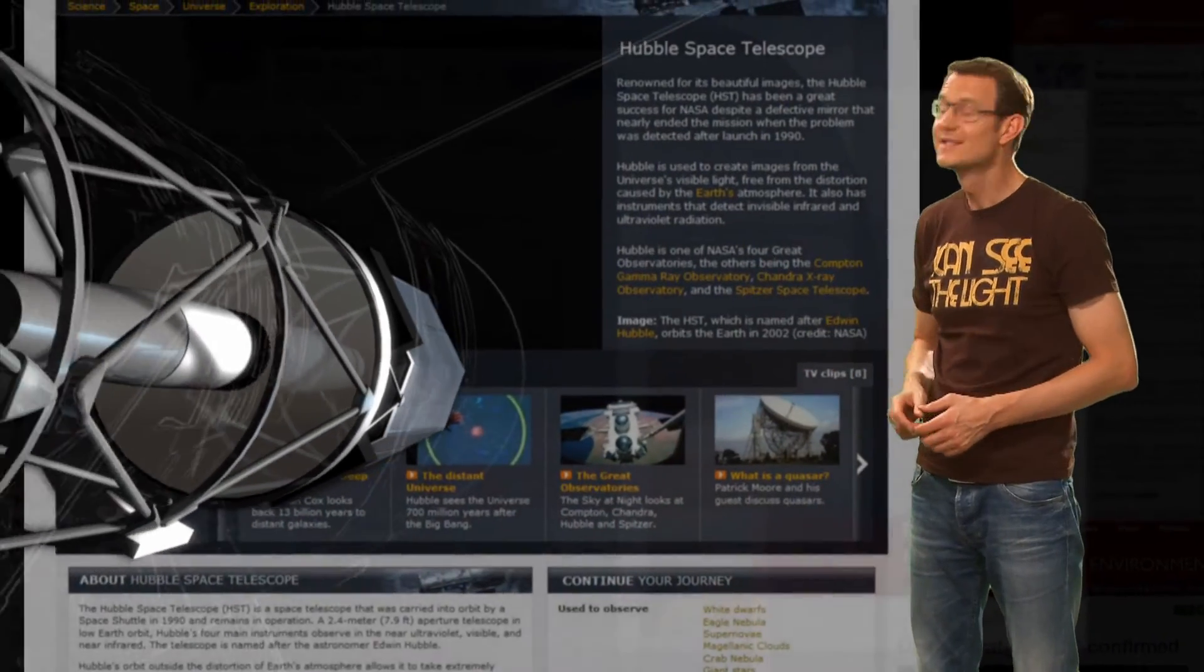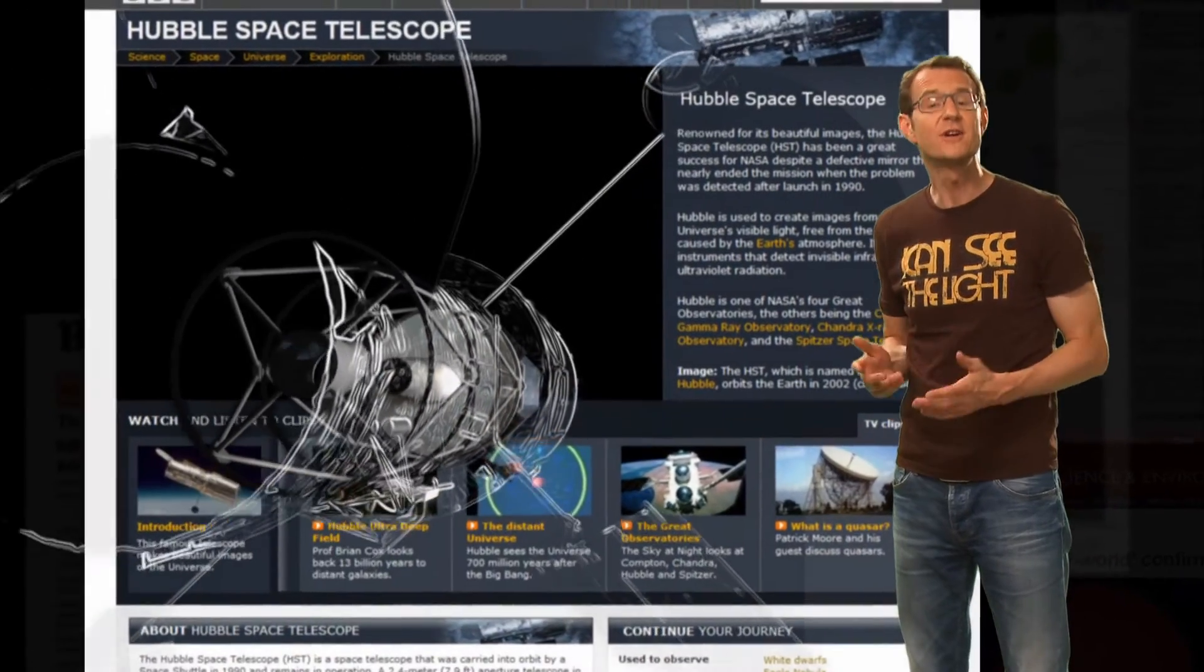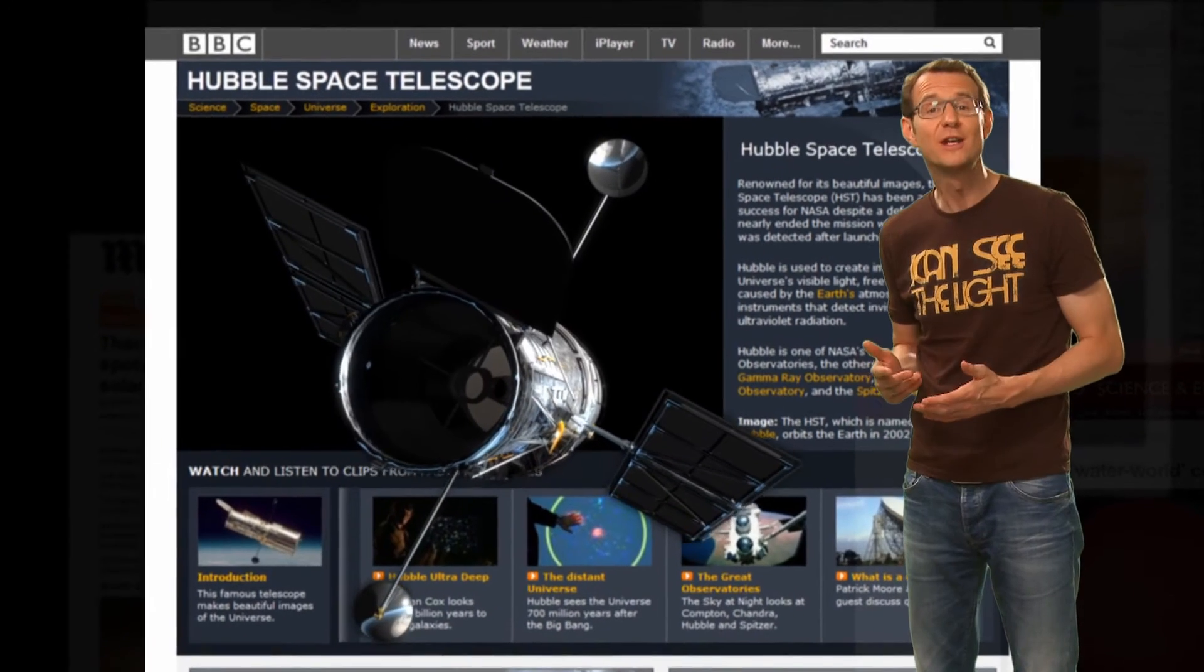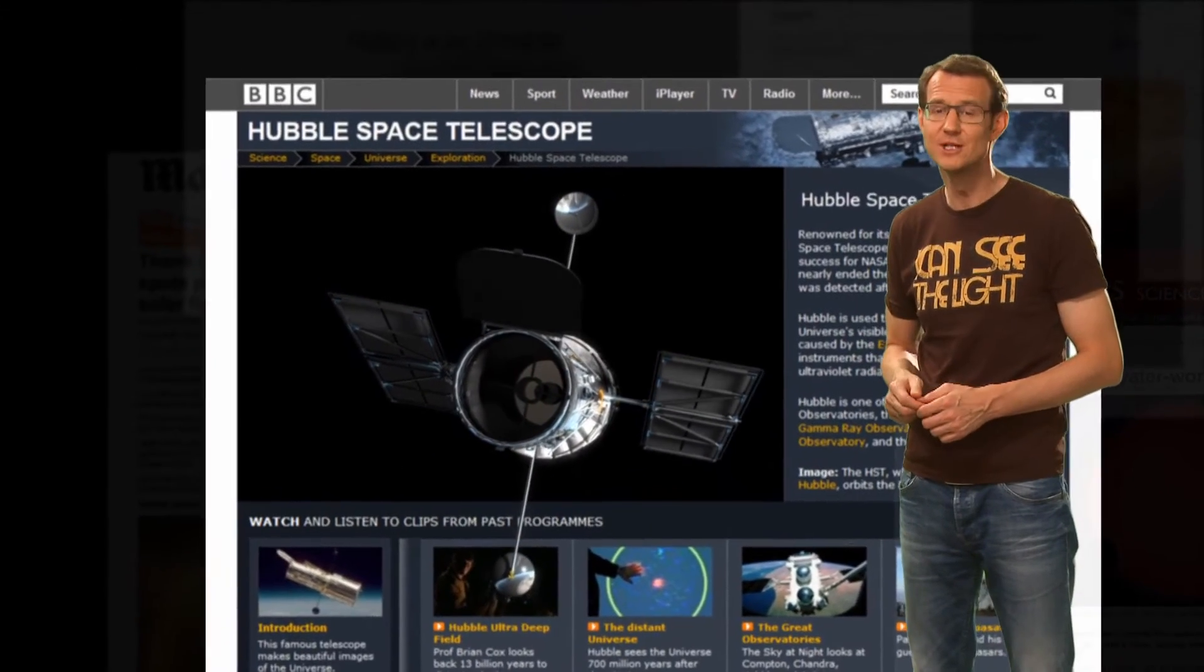Hubble has a couple of instruments on board that do this kind of science. They function a lot like high-tech versions of a prism, except they work even on the faintest of galaxies and can take extremely precise measurements of brightness.